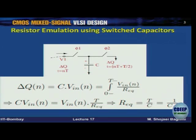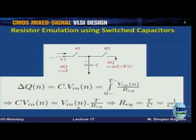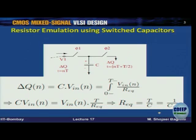By making these two equal — noting that V_in(n) is constant — we get R_eq = T/C, or equivalently 1/(C·Fs). This is the equivalent resistance, and now we can replace resistors in the continuous-time analog domain with switched capacitors in discrete time.